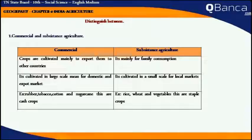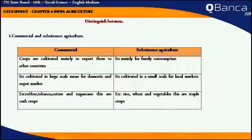Examples of commercial agriculture include rubber, tobacco, cotton, and sugarcane. Examples of subsistence agriculture include rice, wheat, and vegetables.